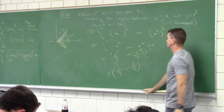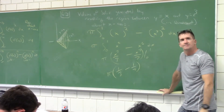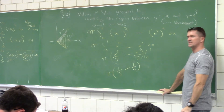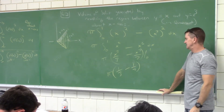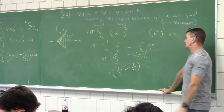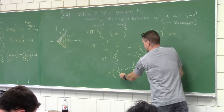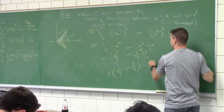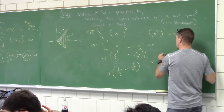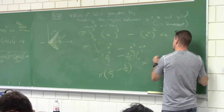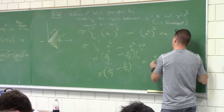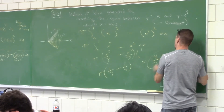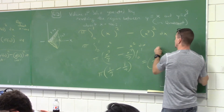I need to plug in the zeros. That's 1/3 minus 1/7. What's 7/21 minus 3/21? That's 4/21 for the pi. There's the volume.